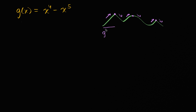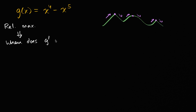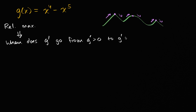If you look at this interval, g prime is greater than zero. And then over the next interval, when you're decreasing, g prime would be less than zero. So what we really need to think about is when does g prime go from positive to negative — from g prime greater than zero to g prime less than zero. The values we look at are our critical points, where g prime is either zero or undefined.